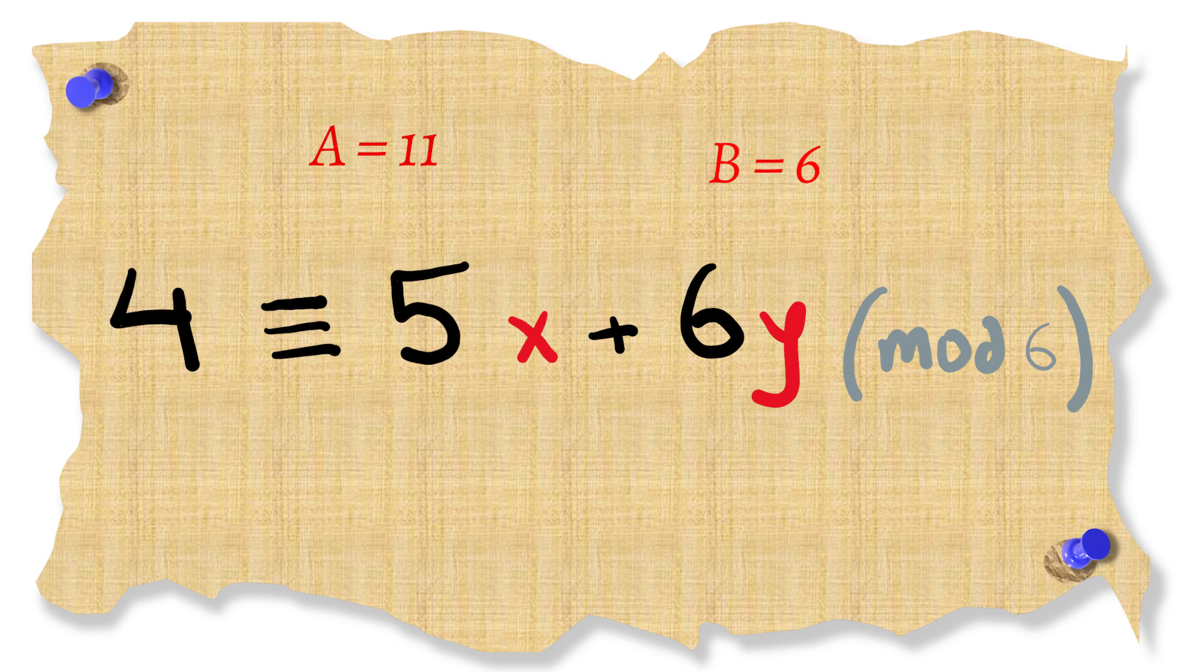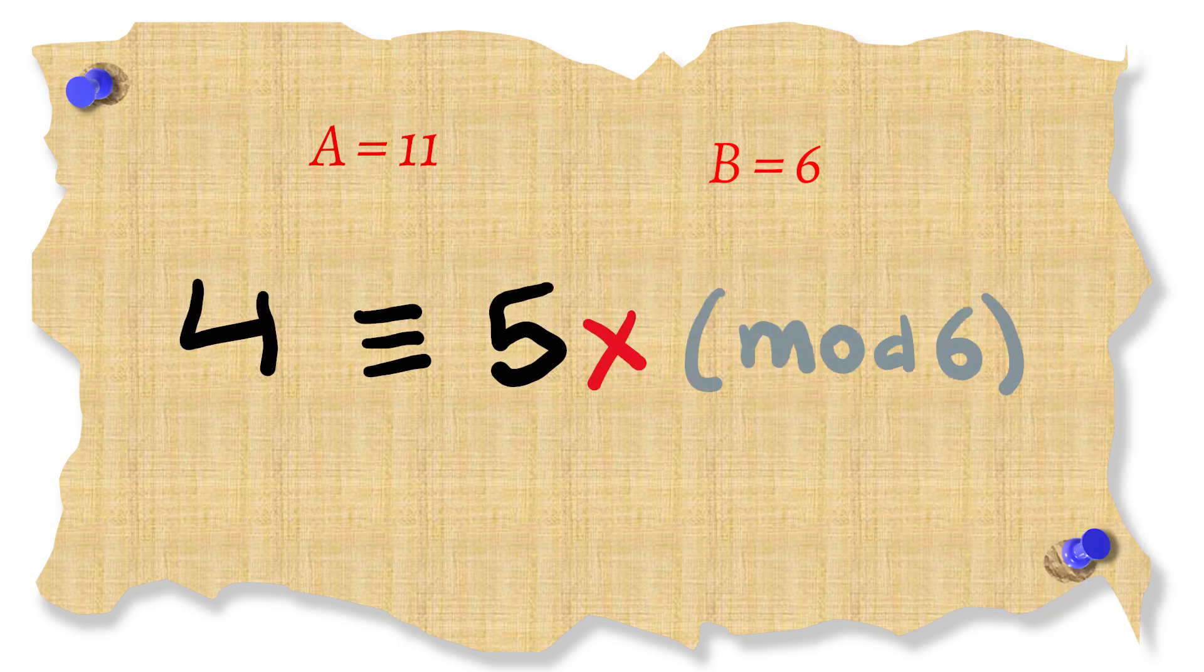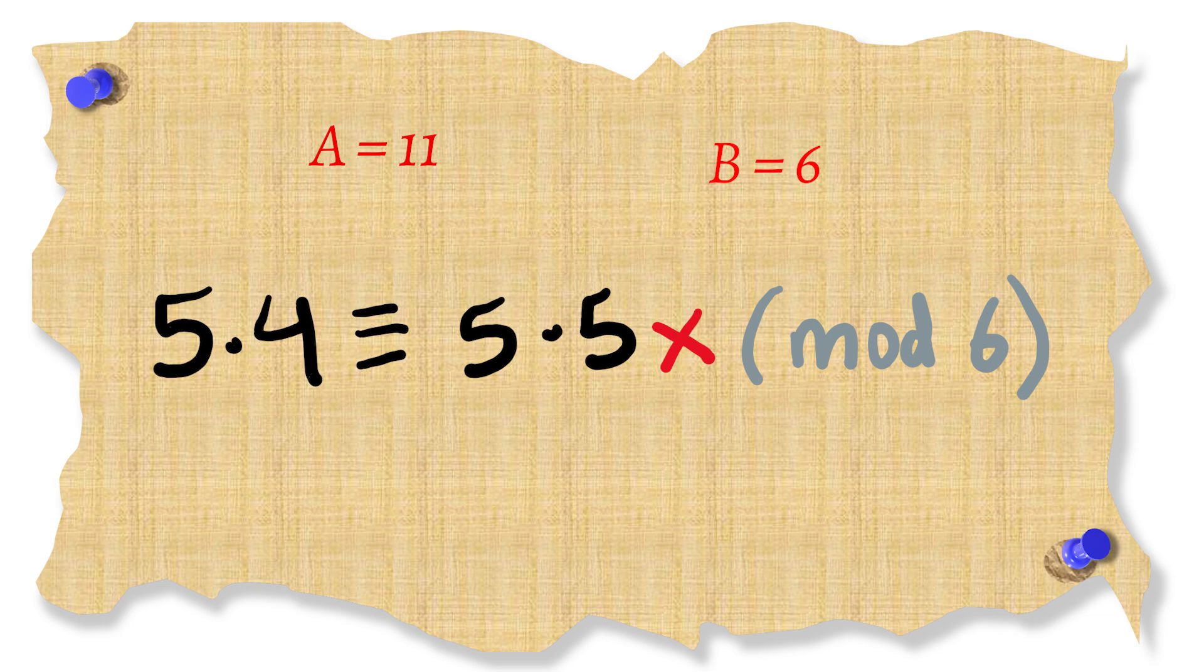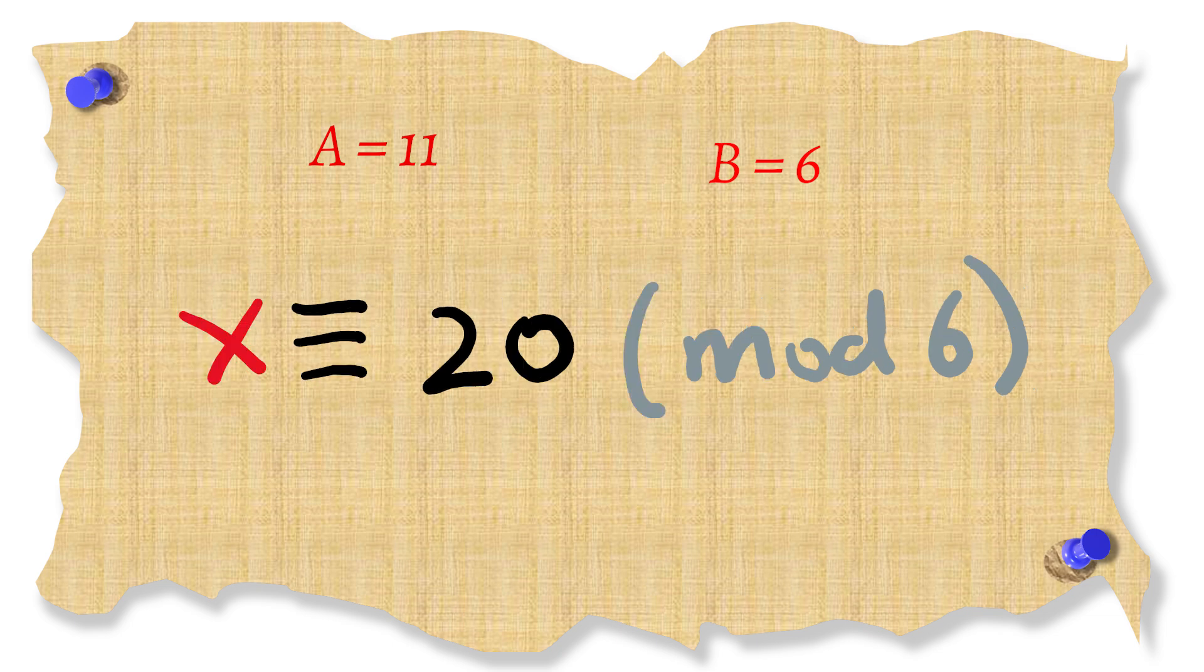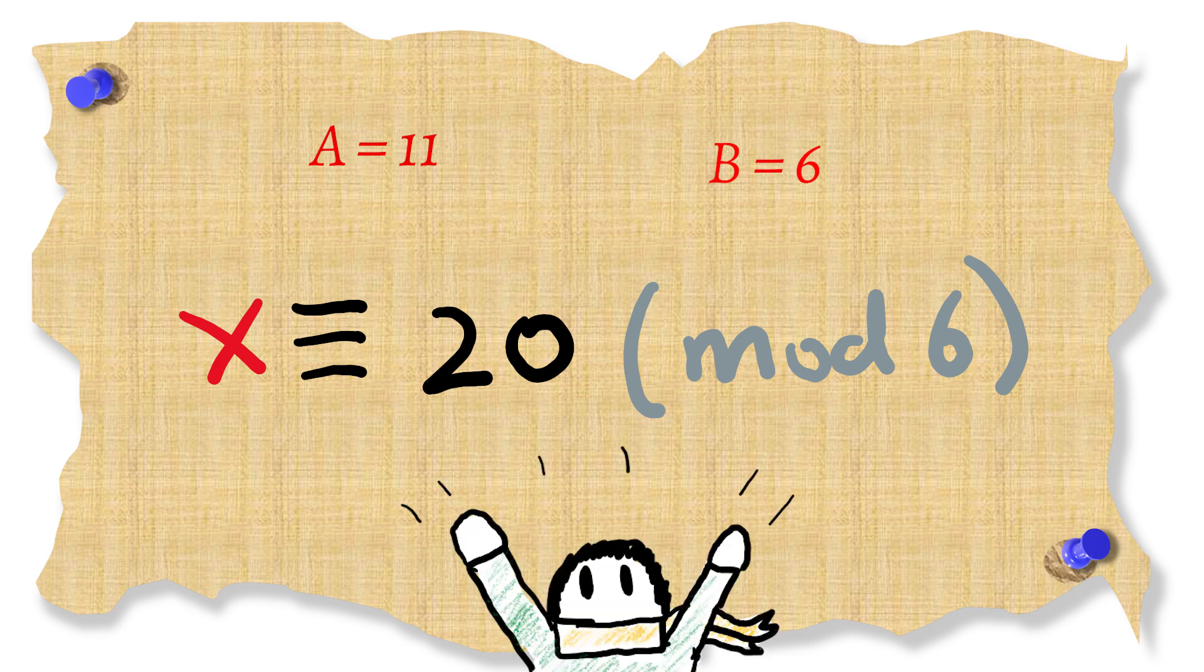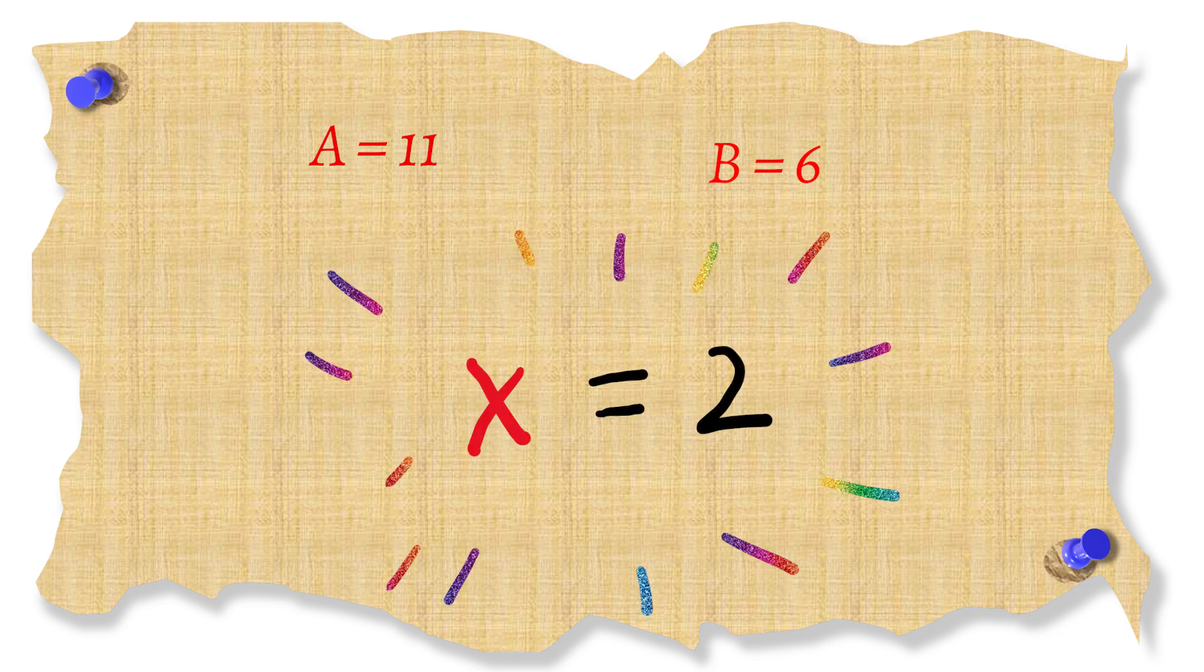And so we have 4 is congruent to 5x modulo 6. The inverse of 5 modulo 6 is 5 itself and multiplying this on both sides cancels out the 5 and this gives us x is congruent to 20 modulo 6. But this number is too big and so we picked the smallest number which is 2 and thus x is equal to 2.